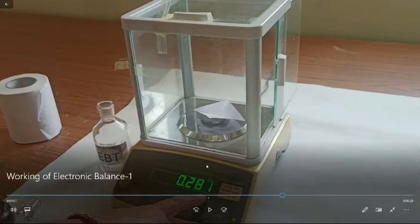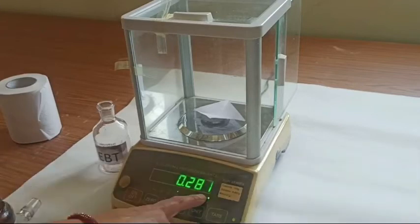And the weight of this paper is 0.281. If in this form we add our sample then that is to be added. So we need to mention this first in our notebook and then whatever be the weight after putting the sample over this white paper, we need to subtract that paper weight. So only then we will get the weight of the sample.